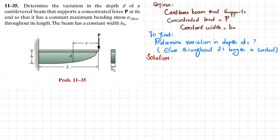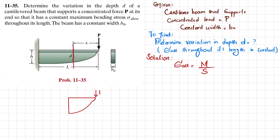Let's start with the solution. The allowable bending stress is equal to moment divided by section modulus. We do not have the moment yet, so what we will do is cut the beam at a distance of x. If I draw the free body diagram, at this point you have a load of P.